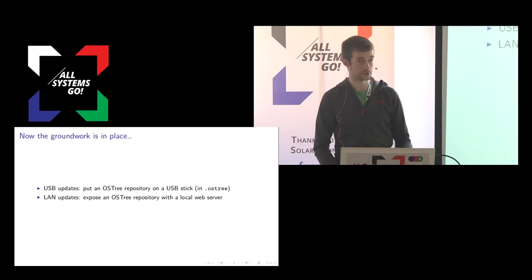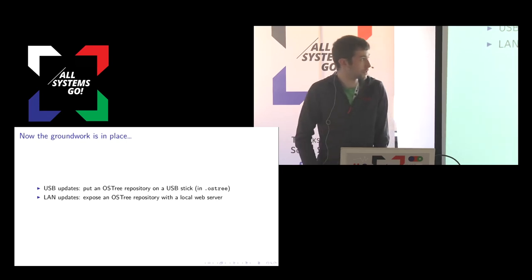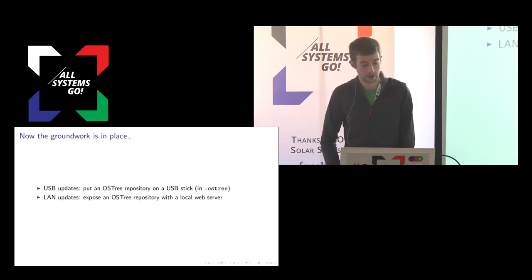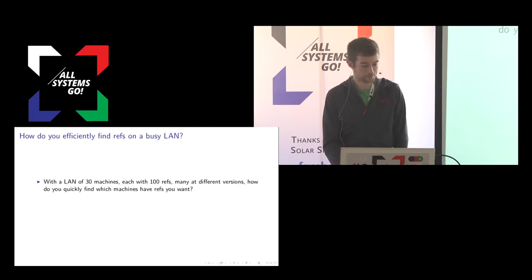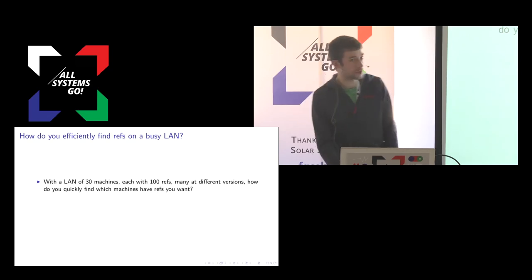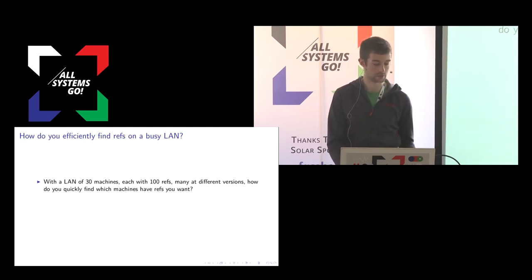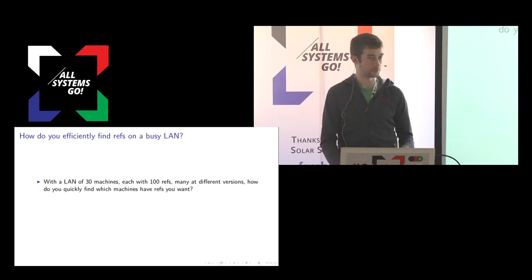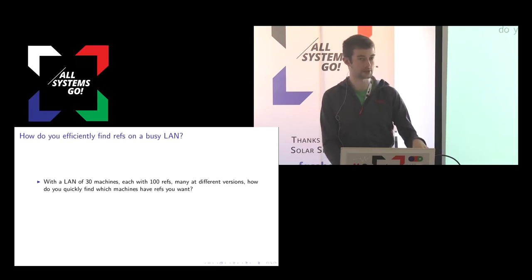Now the groundwork is in place — those are the two big problems that were in the way of peer-to-peer updates. For USB updates, we take an OS tree repository and put it in a well-known location on a USB stick. For LAN updates, we expose an OS tree repository on the local network with a web server. But how do you find updates on the LAN without querying every machine? On a LAN of 30 machines, each with around 100 refs at different versions, you need to know which machine has the latest update that everyone else can pull from.